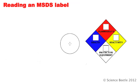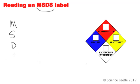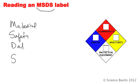MSDS is the acronym used to describe several things. M stands for Material, S stands for Safety, D is Data, and then the final S is Sheet. This MSDS, or the Material Safety Data Sheet, essentially provides you with a very comprehensive list of things that you should know about in terms of safety.